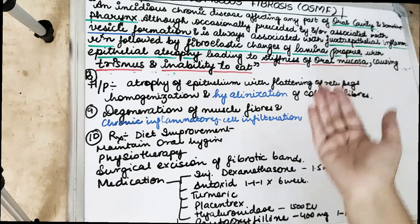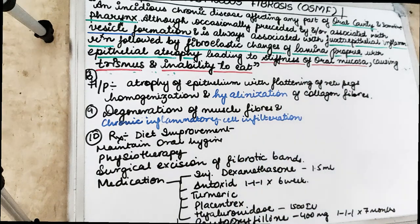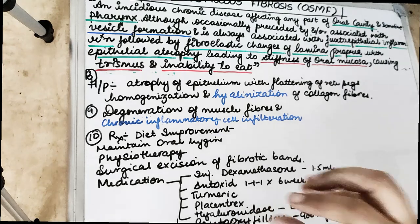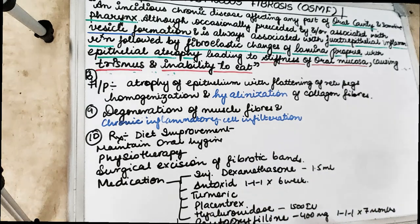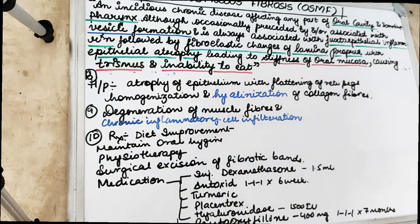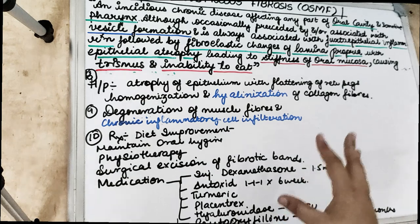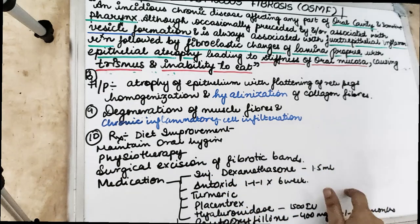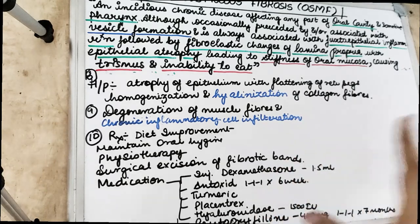For treatment, depending on the degree of involvement, we first ask the patient to stop the habits and improve their diet, since they cannot eat spicy food. We maintain oral hygiene with close follow-up and monitoring. Physiotherapy includes forceful mouth opening exercises, tongue blade exercises, heat therapy, and lukewarm water rinses. If required, surgical excision of the fibroelastic band is performed. Medications include steroids — anti-inflammatory immunosuppressants like injection dexamethasone 1.5 mL — to prevent fibrosis by decreasing fibroelastic proliferation and deposition of collagen fibers.